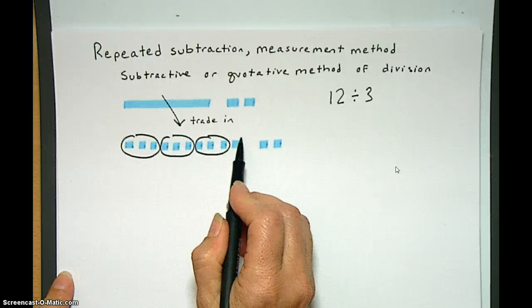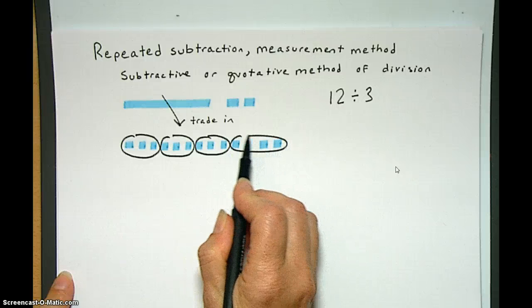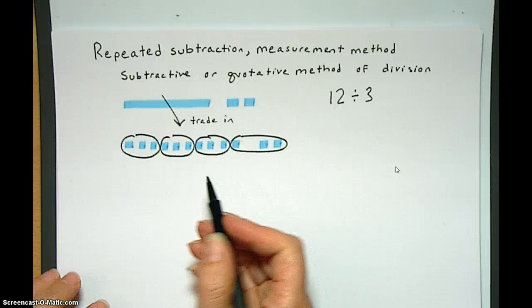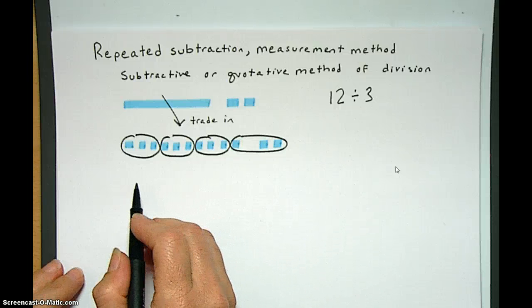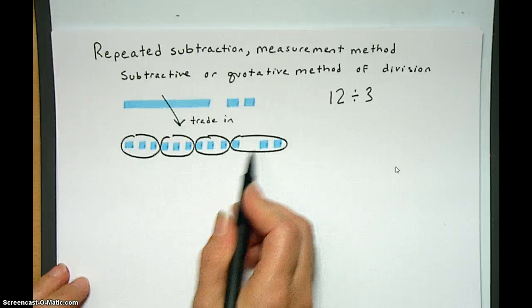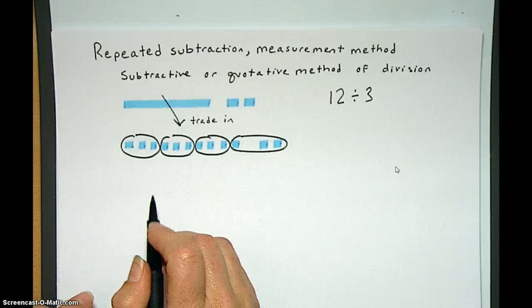and here's 4 groups of 3. So that shows you that if you have 12 objects and you want to repeatedly take out groups of 3, that you'll get 4 groups.